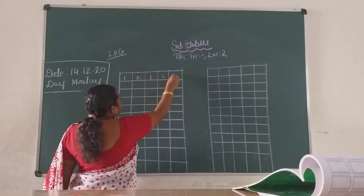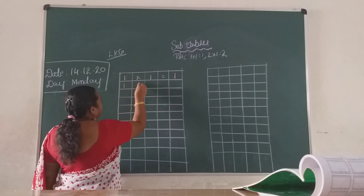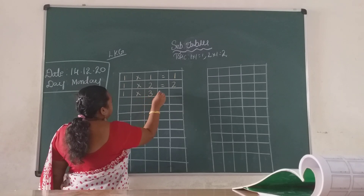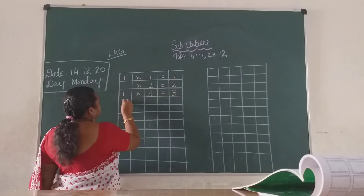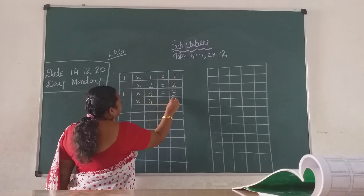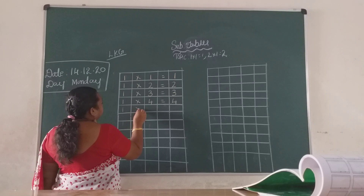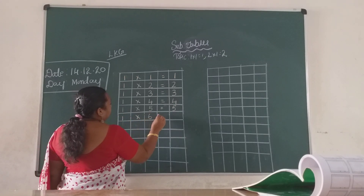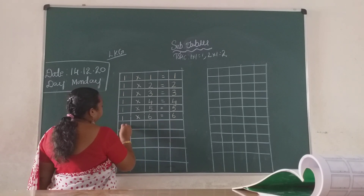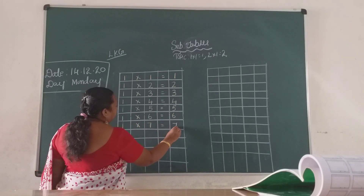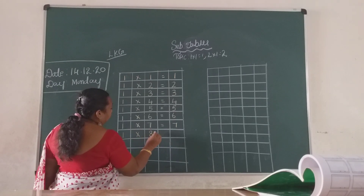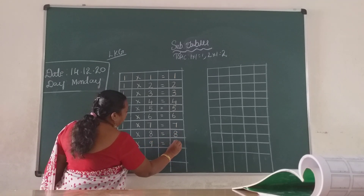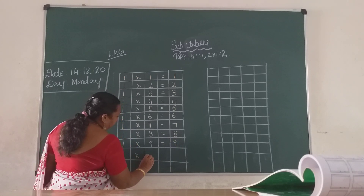One ones are one. One twos are two. One threes are three. One fours are four. One fives are five. One sixes are six. One sevens are seven. One eights are eight. One nines are nine. One tens are ten.